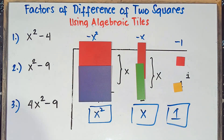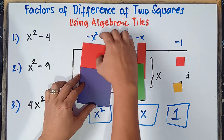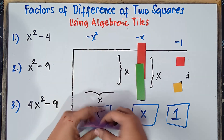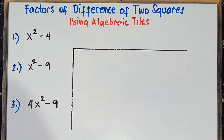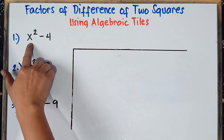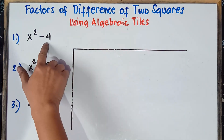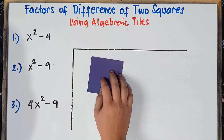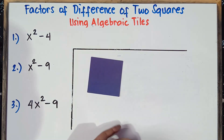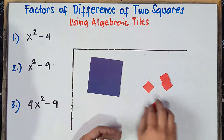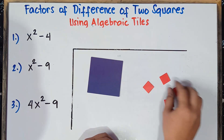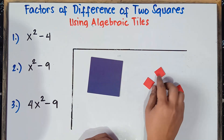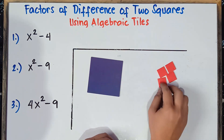So let's proceed to example number 1, applying the algebraic tile. Our given: we have x squared minus 4. So we have 1 positive x squared, and then negative 4. For the negative 4 tiles, we'll be using the red ones — negative 1, negative 2, negative 3, negative 4.